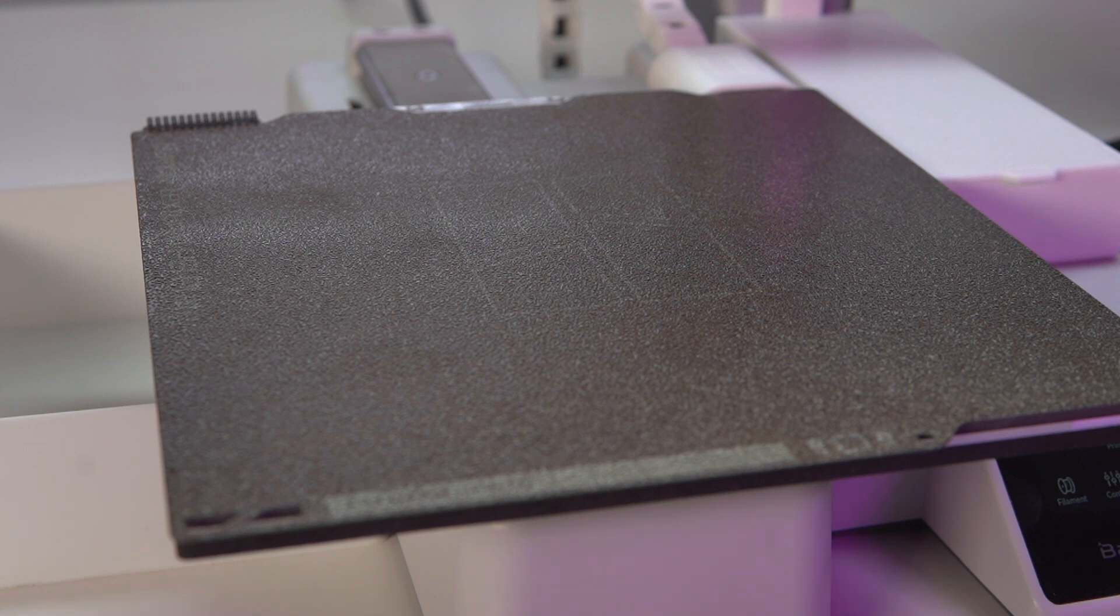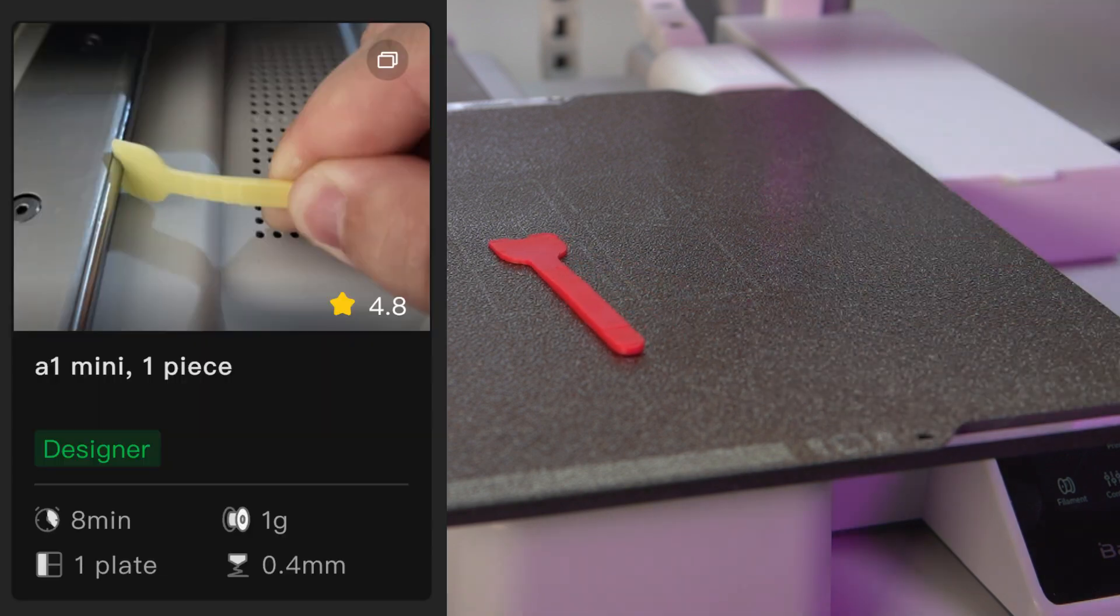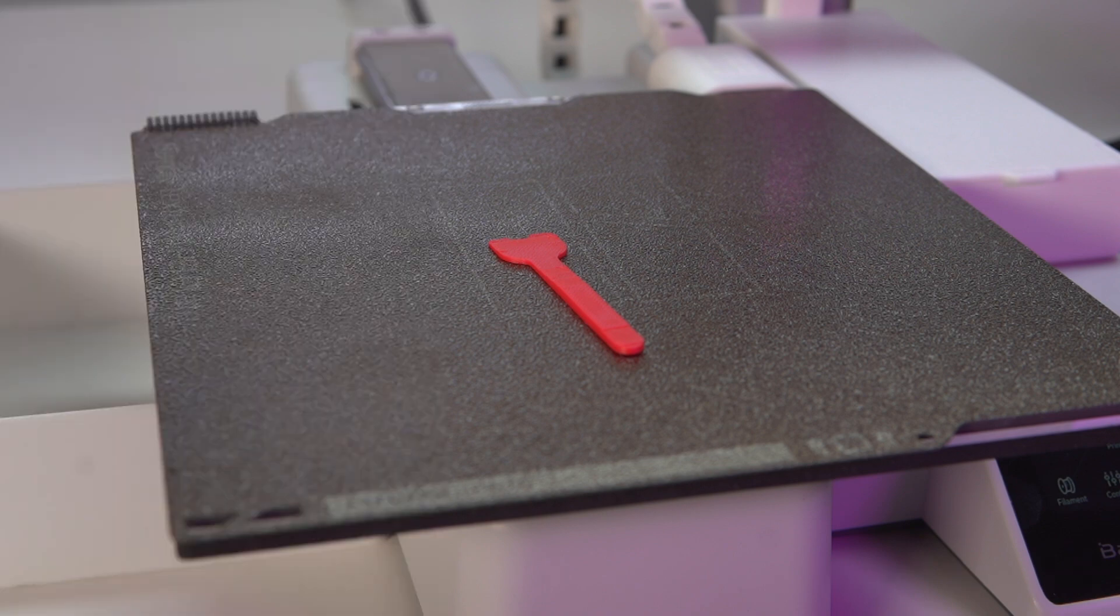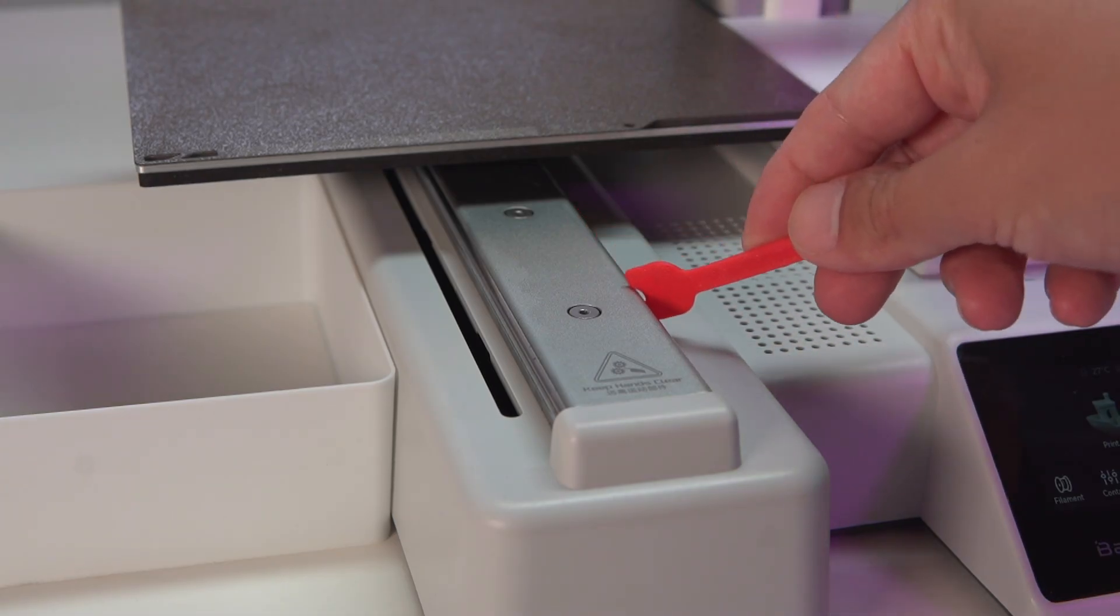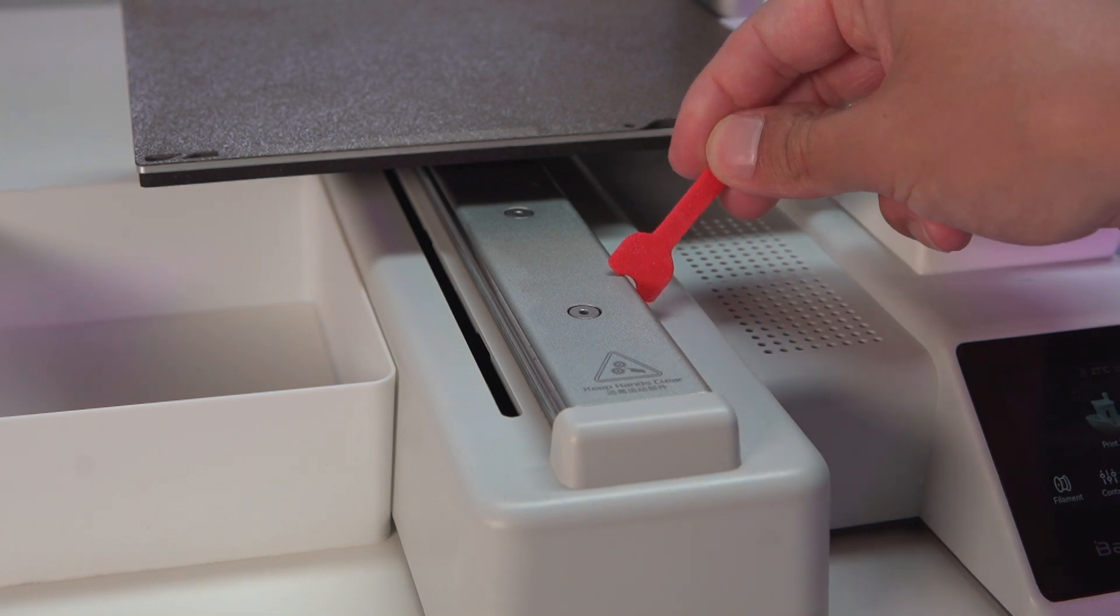Now this next mod did take quite a bit longer than that last seven minute print. This right here took a total of eight minutes to print out and one gram of filament. This little guy will help you lubricate all three axes of the A1 mini, as you can see here.